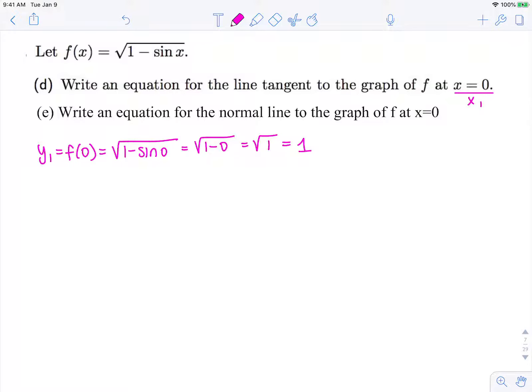Now remember, in order to find our slope of our tangent line, we need our derivative of this function. And remember this function is 1 minus sine x to the 1 half.